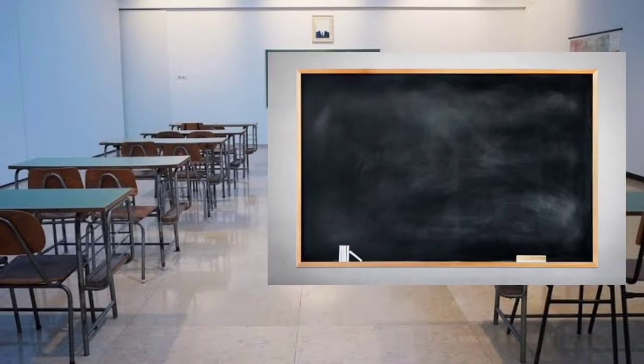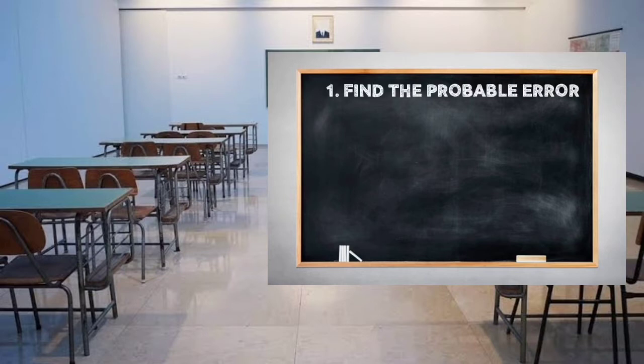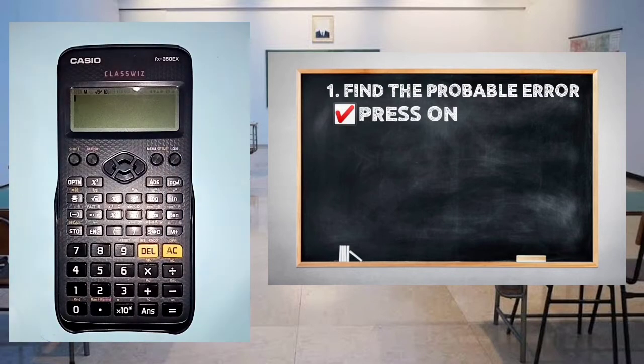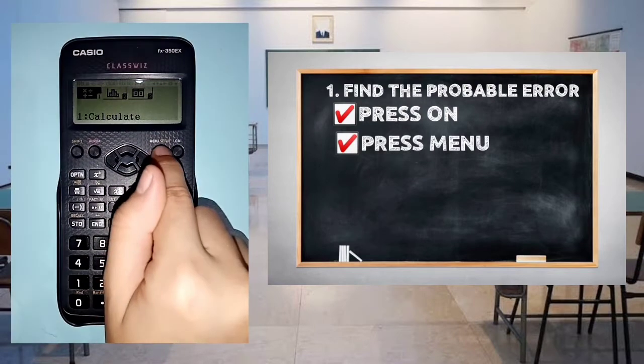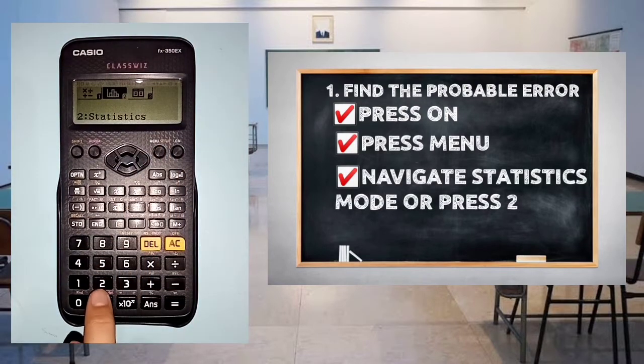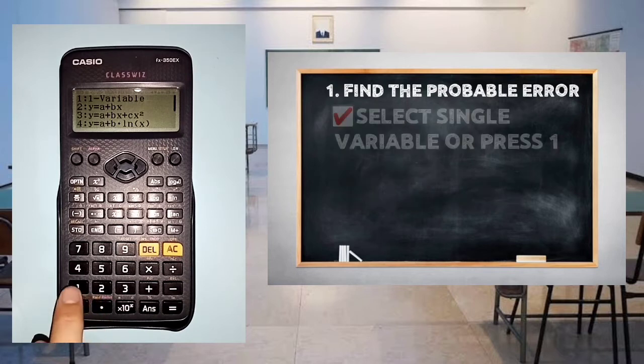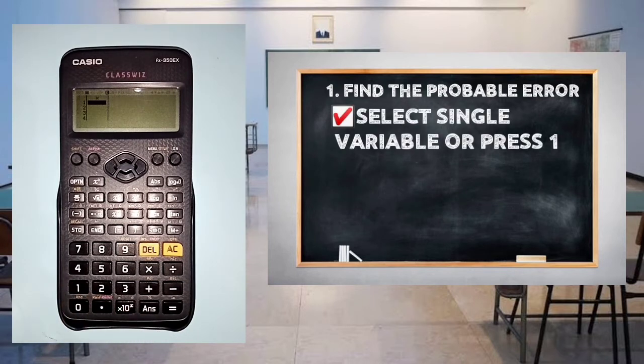For the first question, find the probable error. I'm using the Casio FX-350EX calculator. First, press ON. Next, press menu. Then navigate to statistics mode or press 2. Select single variable or press 1.